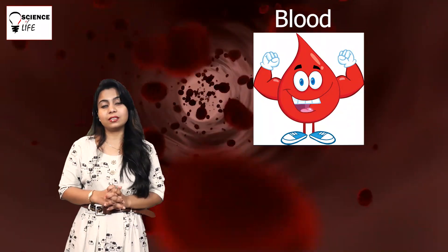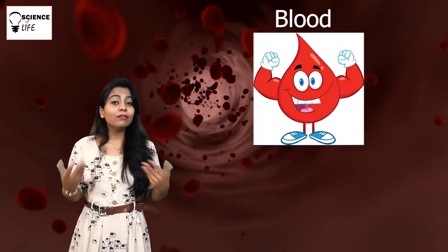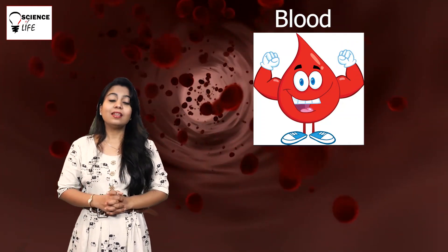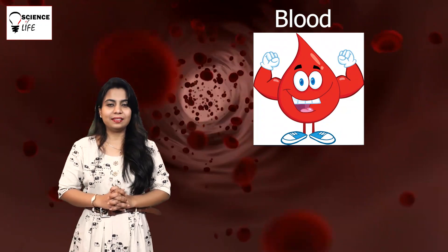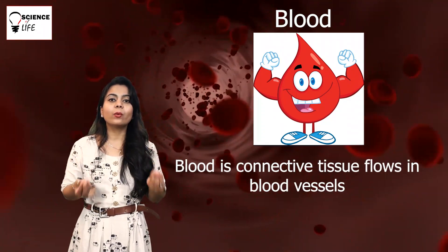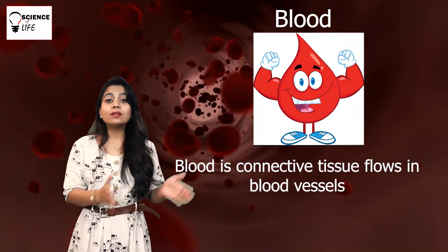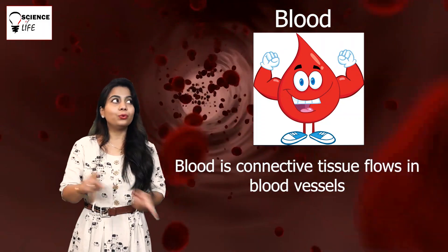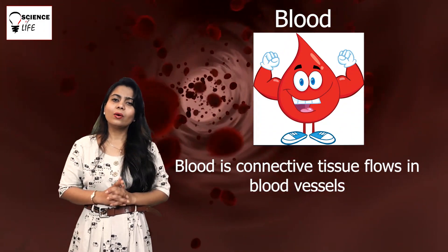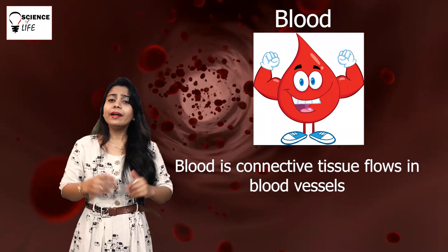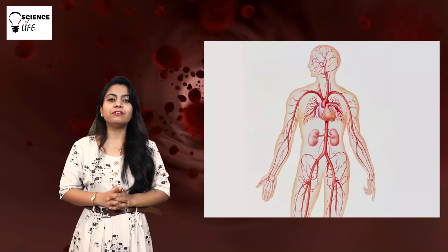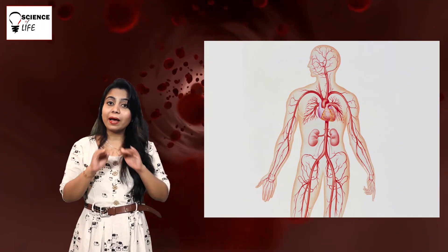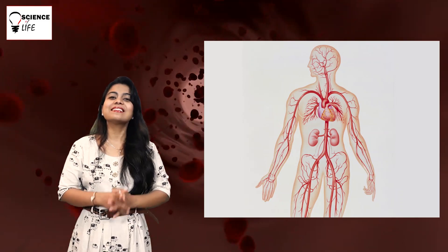Blood is very important in our body. Whenever you get an injury, the red liquid that comes out of our body is blood. Blood is actually a connective liquid tissue which flows and floats in the pipelines called blood vessels throughout all your body. It is called connective tissue because it connects all the body cells with each other through these pipelines.